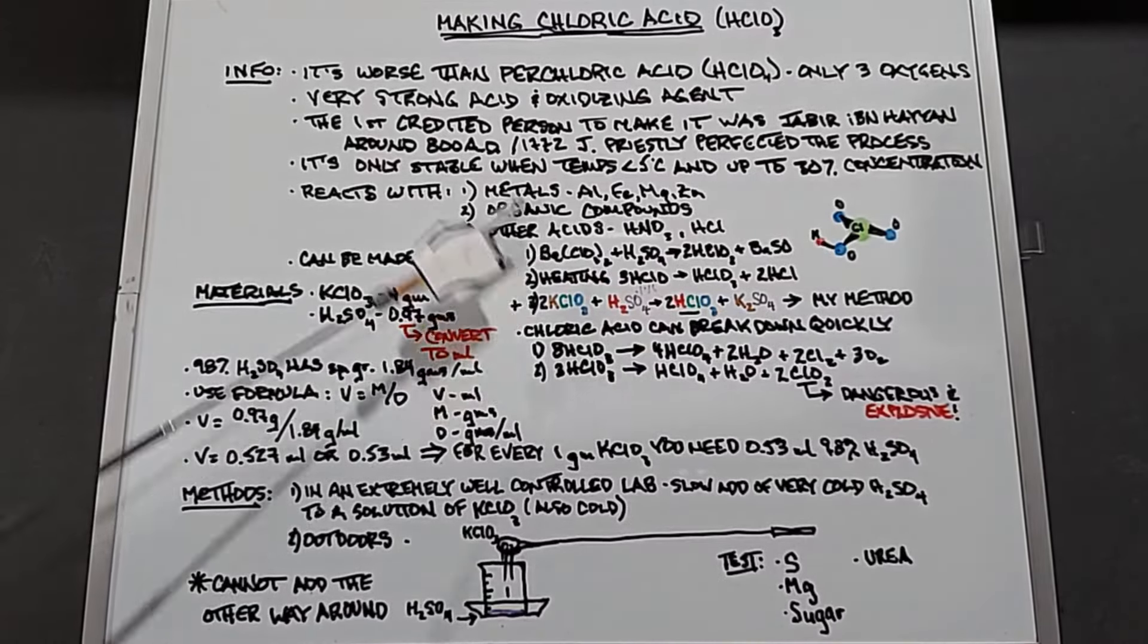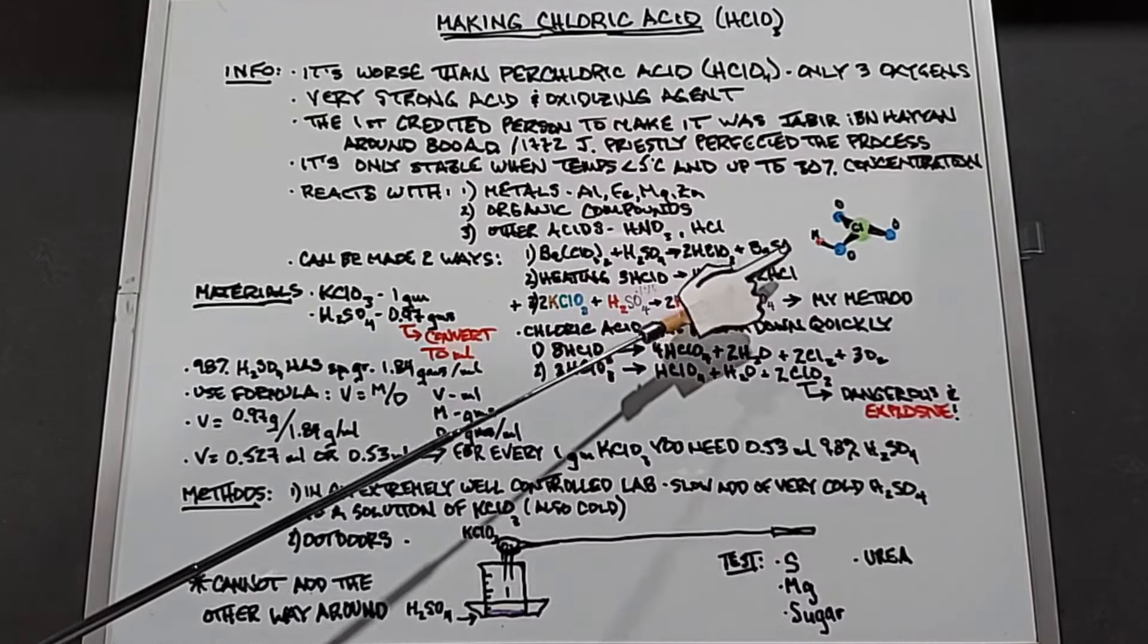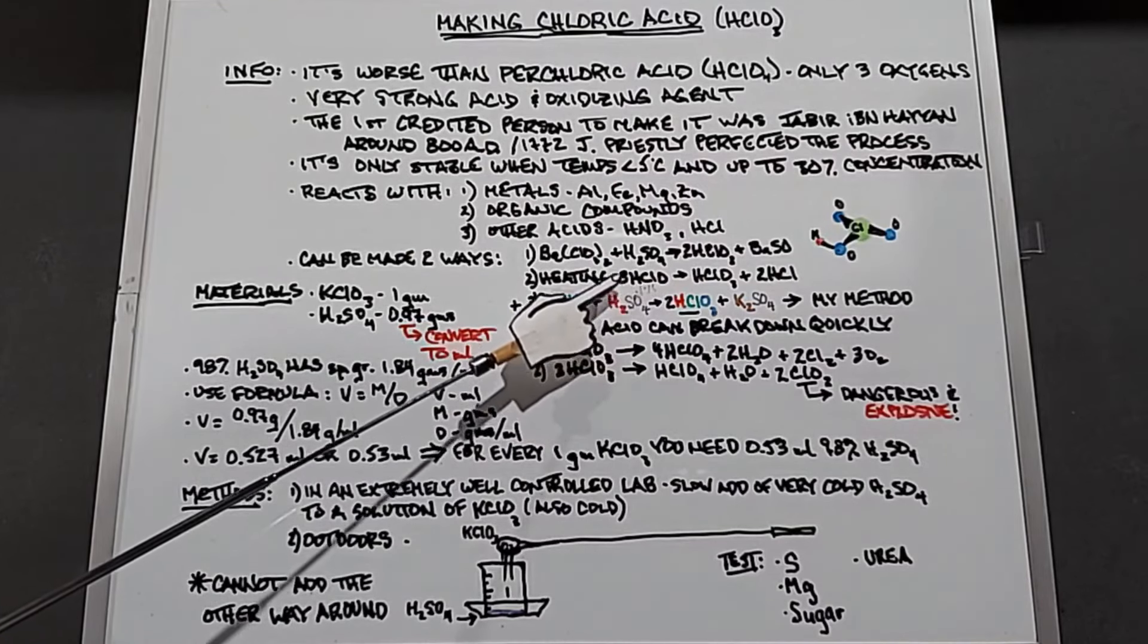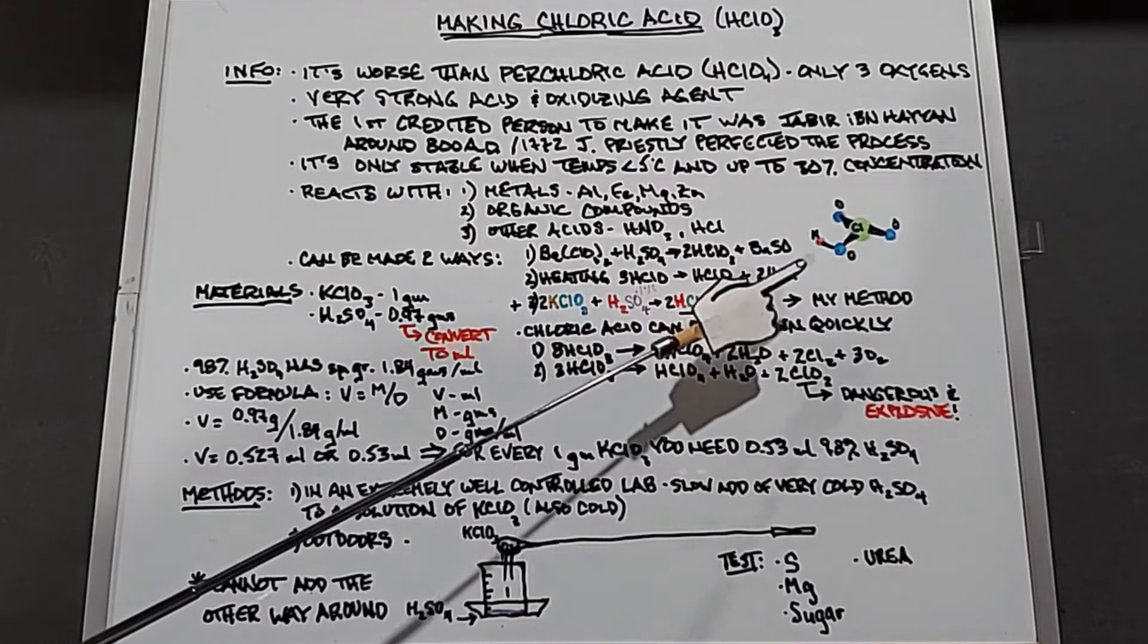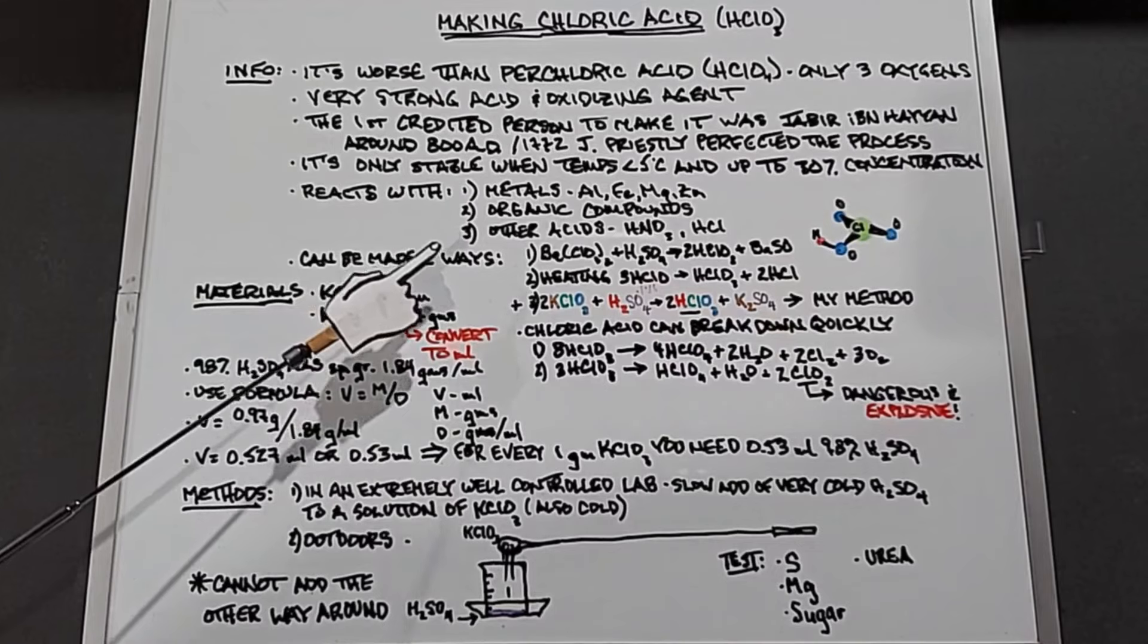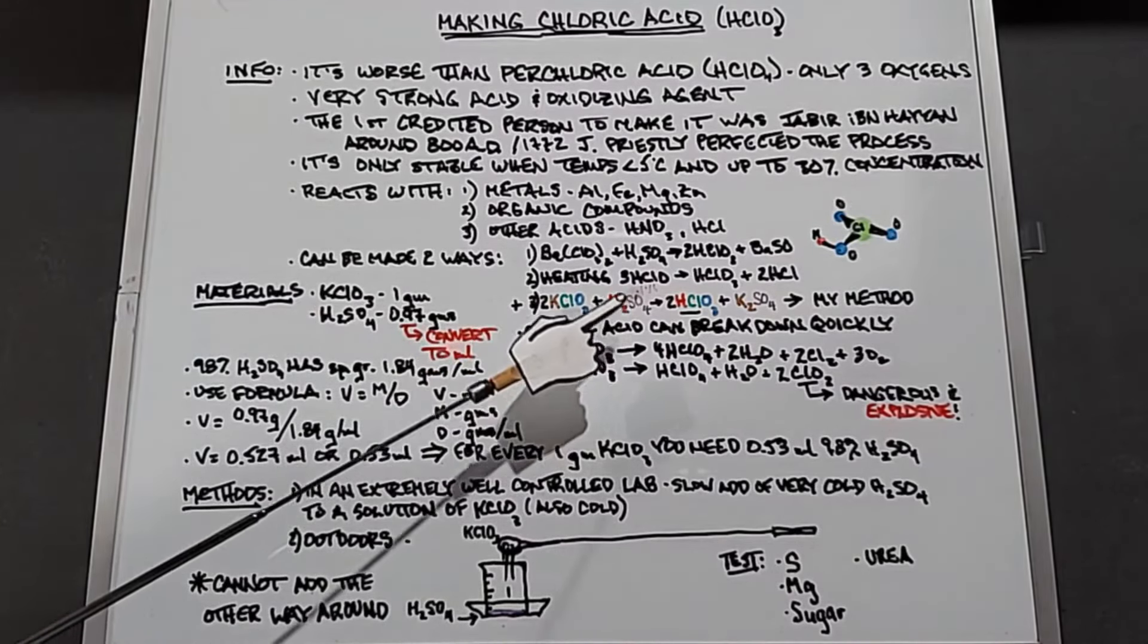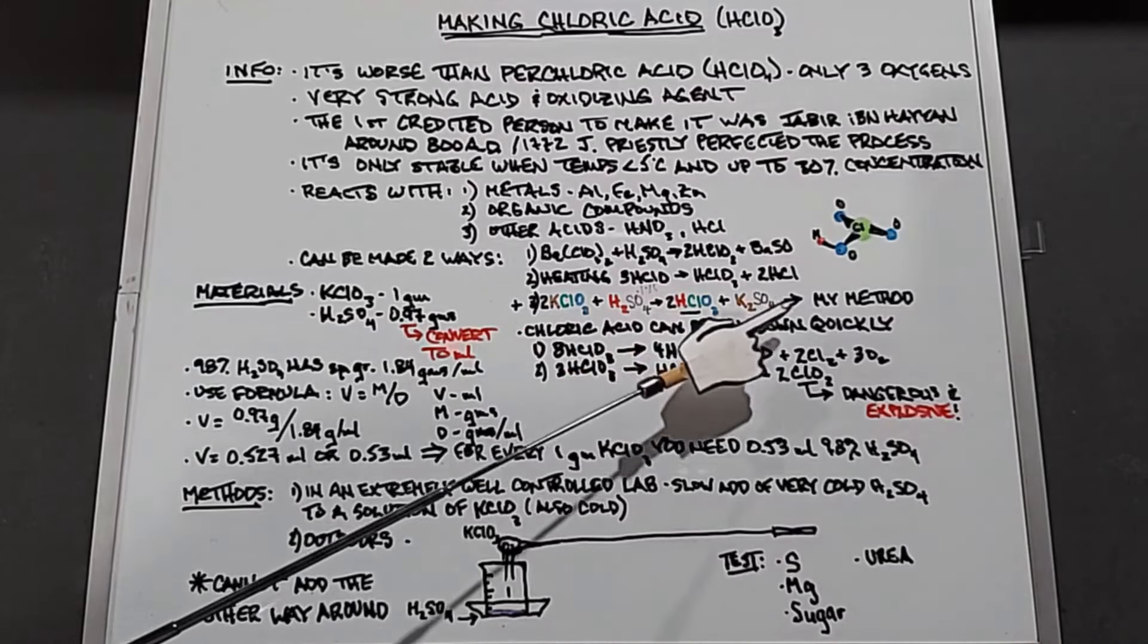It will also undergo a pretty bad spontaneous reaction with strong reducing agents. It can be made in one of two ways: barium chlorate plus sulfuric acid yields chloric acid plus barium sulfate, or heating three HClO which is hypochlorous acid. But there's a third - I'll be using potassium chlorate and sulfuric acid, which gives chloric acid and potassium sulfate.